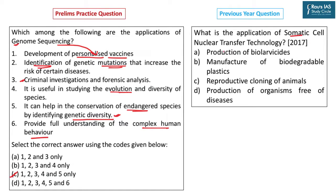UPSC in 2017 asked: what is the application of somatic cell nuclear transfer technology? Nuclear transfer means DNA material is being transferred from the nucleus, which should help in reproductive cloning of animals. Thank you for attending this session — be upbeat as prelims is approaching. Feel confident. In the last month, just practice questions, revise the compilation of questions from DPP, and revise the test series you have already given. Going through many questions will make you feel very confident before the exam.